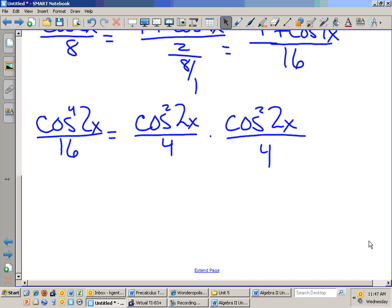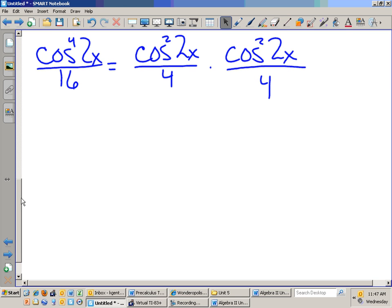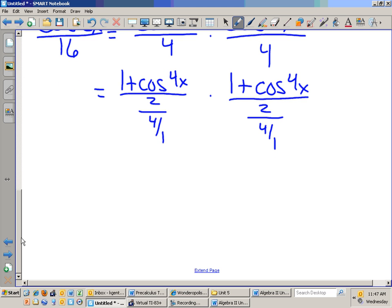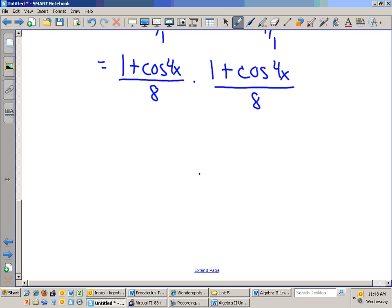Sorry for the interruptions. Here we go. So, we separate cosine to the fourth like that. That is then 1 plus cosine of 4x over 2 over 4 over 1 times 1 plus cosine of 4x over 2 over 4 over 1. So, that is 1 plus cosine of 4x over 8 times 1 plus cosine of 4x over 8.